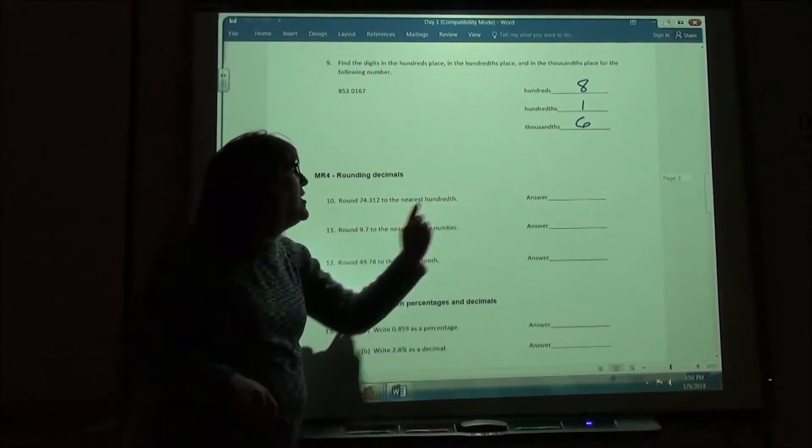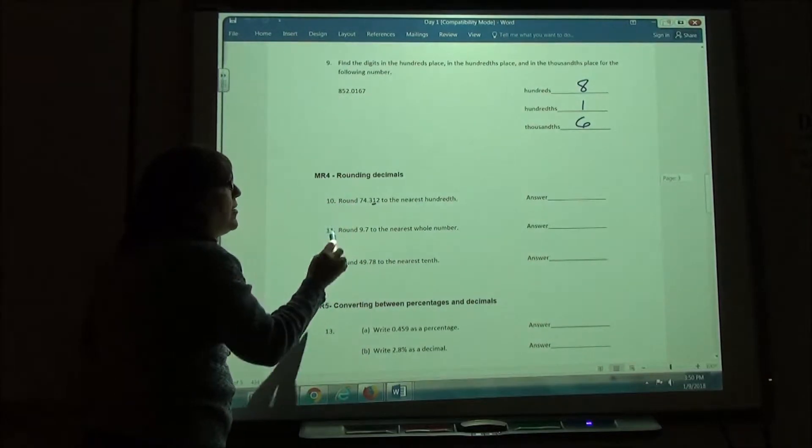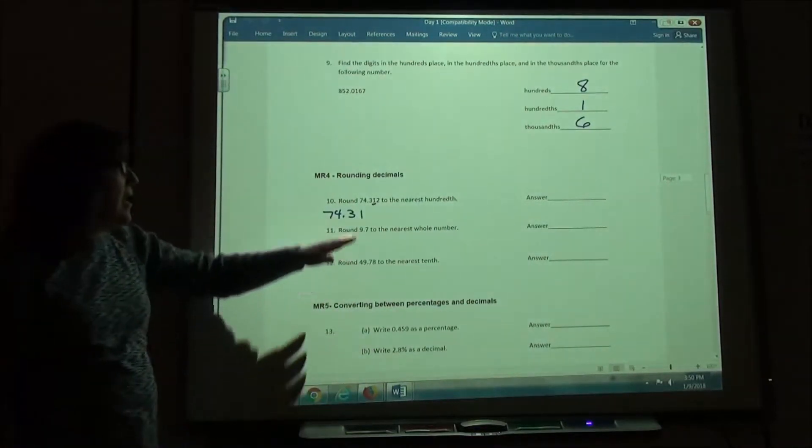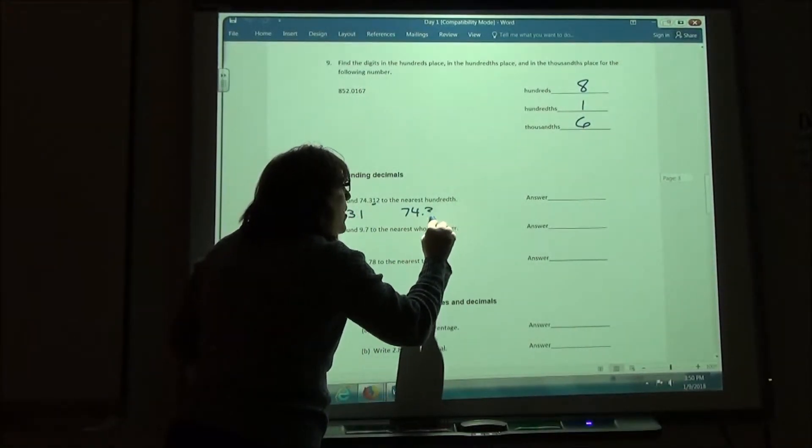So if I'm rounding this to the nearest hundredth, I'm looking at my hundredth spot, so everything up to that point would be 74.31. I'm saying, do I leave it at that number or do I round it up by 1, which would be 74.32.